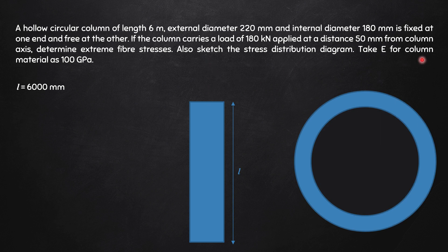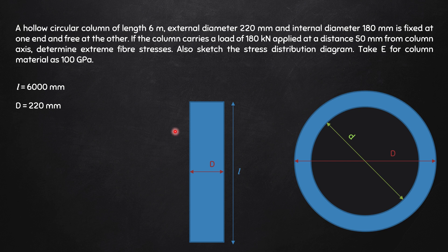Looking from the top, you can see the cross-section. The external diameter D is 220 mm and the internal diameter small d is 180 mm. The column is fixed at one end and free at the other — we will take this up later. The column carries a load of 180 kN applied at a distance of 50 mm from the column axis. Since this is a symmetrical column section, the column axis passes right through the center — this point in plan and this point in elevation.